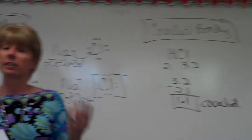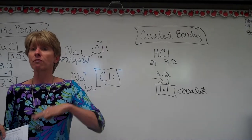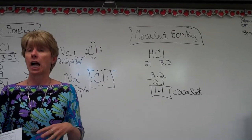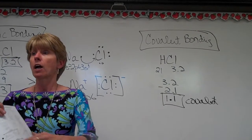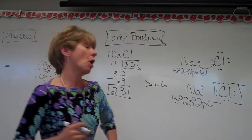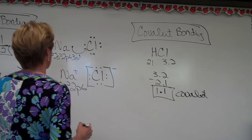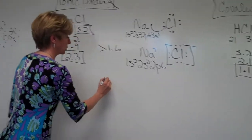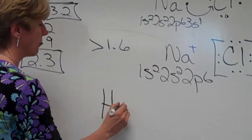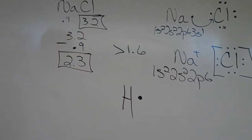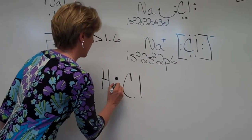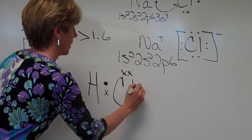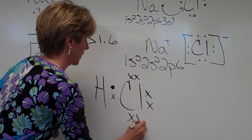Now when you do covalent bonding, there's never the formation of ions. Okay? So let's draw the Lewis structure for HCl. Hydrogen has one valence electron. Chlorine has one valence electron. And look at what we're going to be left with.